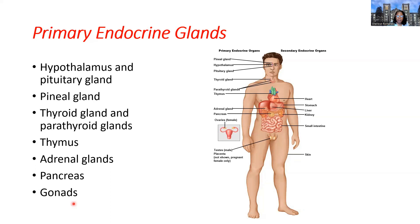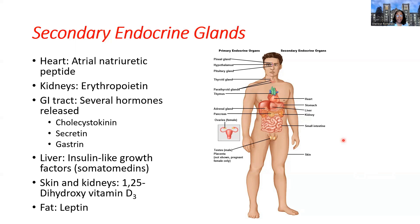Lastly, the gonads are the region containing gametes or sex cells — the testes in males and the ovaries in females. Now, some of the secondary endocrine glands have another primary function. The heart, for example, primarily serves the circulatory system.